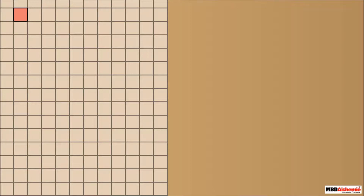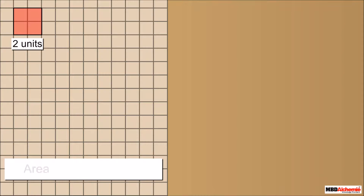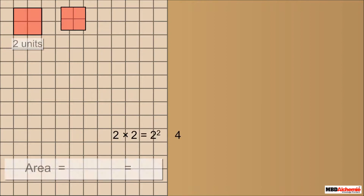Similarly, let us consider a square of side 2 units. It is further divided into 4 unit blocks. The area of this square is 2 into 2, which we write as 2 squared, which is equal to 4.